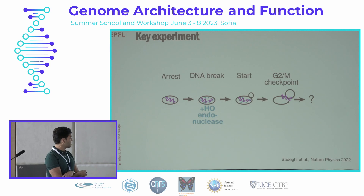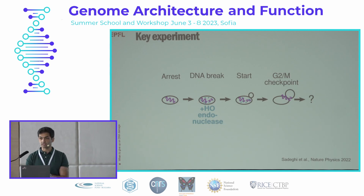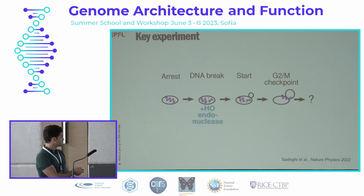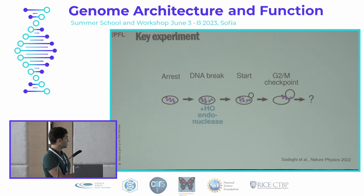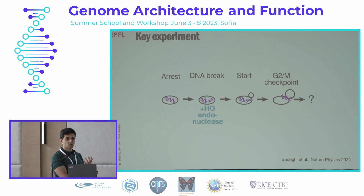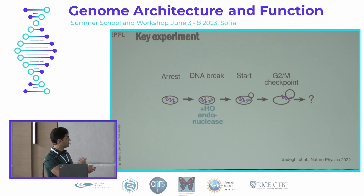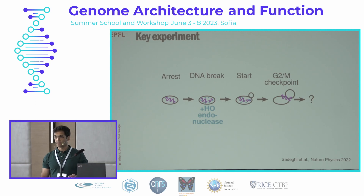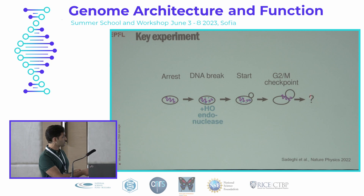We have been performing this core experiment over and over again. We took yeast cells which were haploid — they have one copy of each chromosome. We arrest them in G1. Then using this endonuclease HO, we induce a number of breaks which we control: we control where these breaks are and how many there are. Then we induce start, so cells immediately start budding and then they arrest at what's called a G2/M or DNA damage checkpoint. All of this is textbook biology, and what we've been interested in is what happens next.